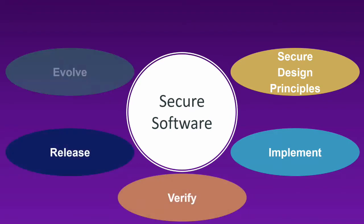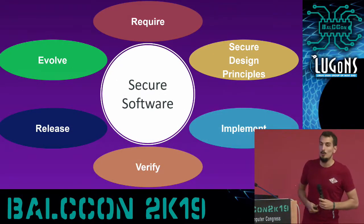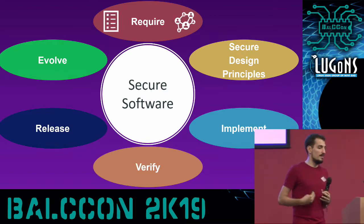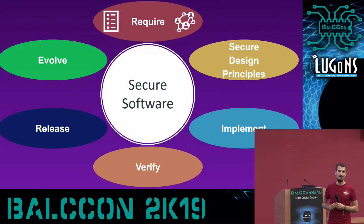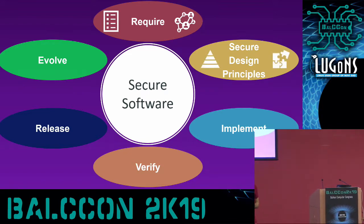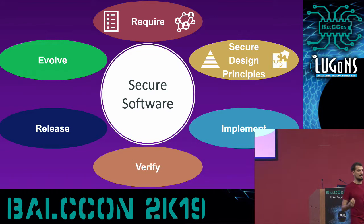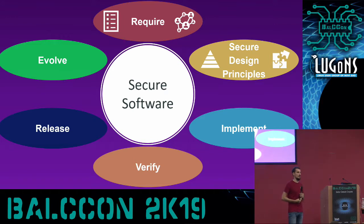We want to have secure software, and as software engineers know, this is not something that's easy to do. We need to address security throughout the software development lifecycle — specify the security requirements, examine the threat model: who wants to attack us, which assets do they want to harm, and how do we protect them? Then we start designing — we need to construct a secure-by-design solution. This is the first point where secure design principles enter our story.